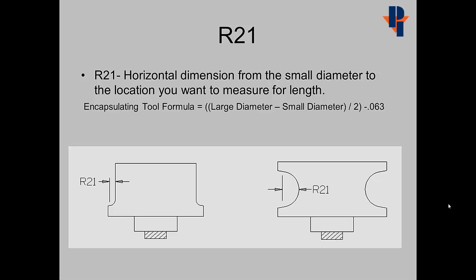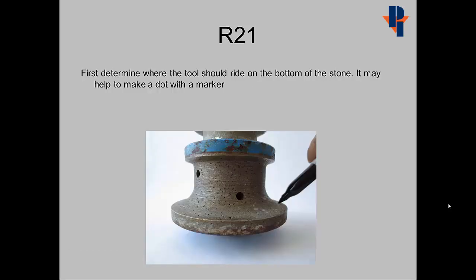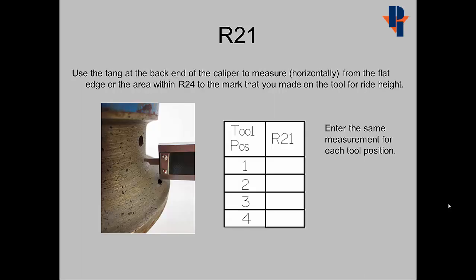R21 is a horizontal dimension from the small diameter to the location you want to measure for length. First, determine where the tool should ride at the bottom of the stone. It may help to make a dot with a marker. Use the tang at the back end of the caliper to measure horizontally from the flat area within the R24 to the mark that you made for the tool ride height. Enter the same measurement for each tool position.